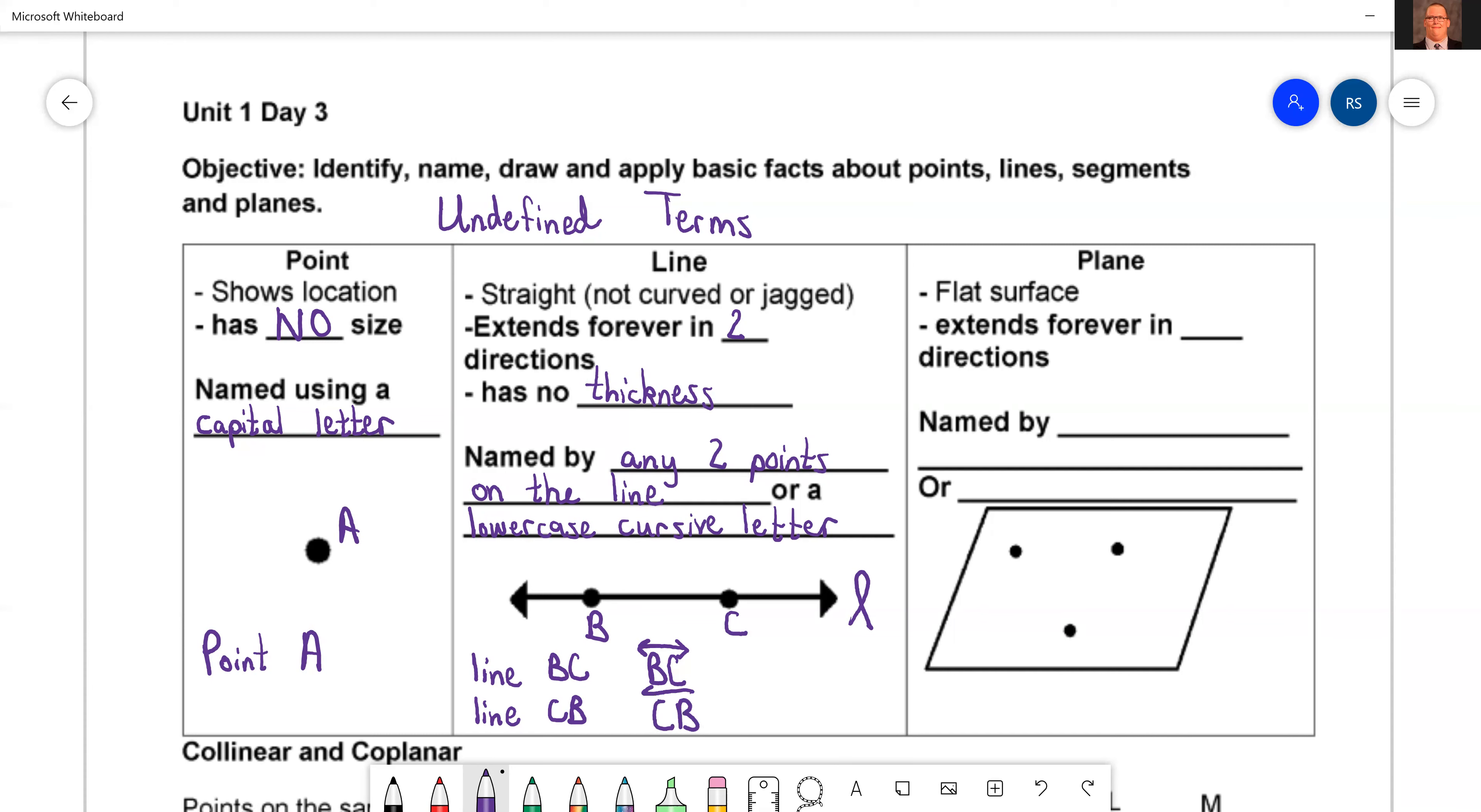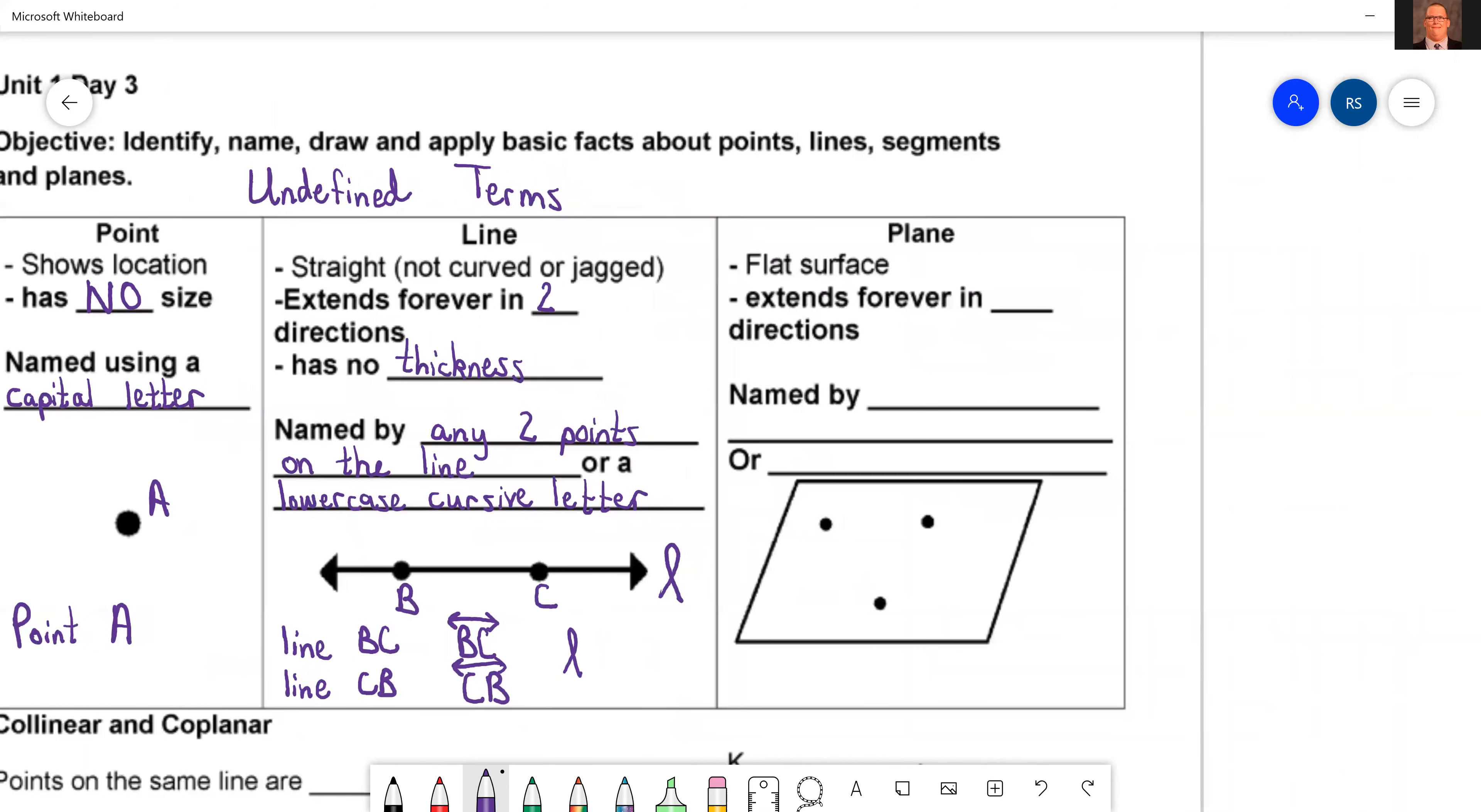You've got to put the arrows if you're talking about a line. Or we have CB, line CB. There's four ways just right there. And then our fifth way, if we didn't want to do any of that, we can just say L with the cursive L. You could say L or you could say line L. There are six ways to name that single line. If we added more points, there'd be even more ways. You just have to have two points on the line or a lowercase cursive letter.